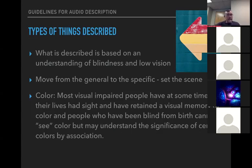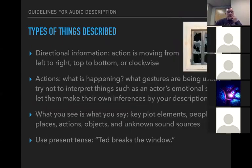Describing color is important. Most blind people weren't blind all their life, so they have some idea of what color is. Even those who were born blind have an understanding of the significance certain colors might mean. And directional information — which way the action's moving, left to right, top to bottom. What gestures are being shown that the blind person wouldn't be able to tell?